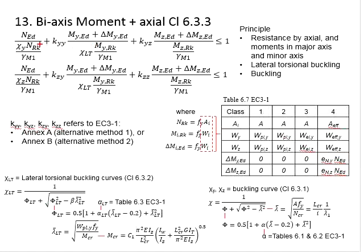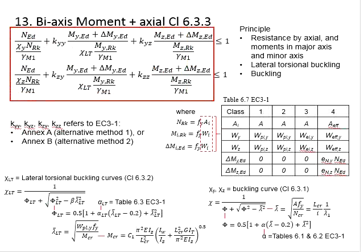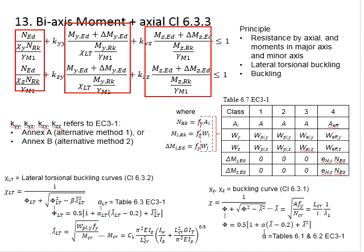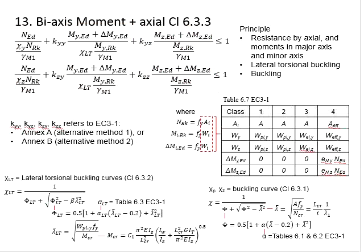In terms of the structure of the equations, the first component refers to the axial resistance. The second component is the resistance or moment in the major axis. And the third component is the resistance or the moment in the minor axis. The upper part represents the load, while the lower part represents the resistance.